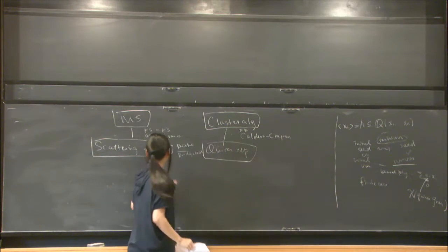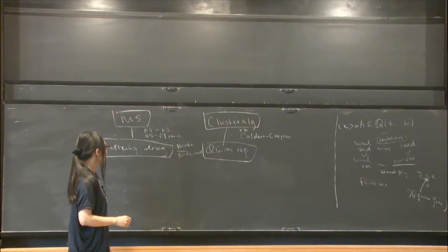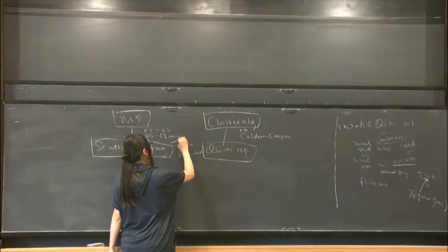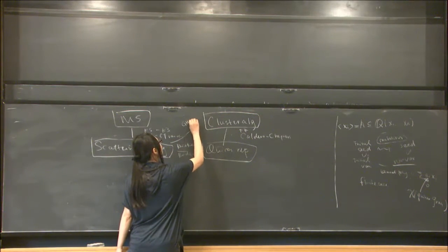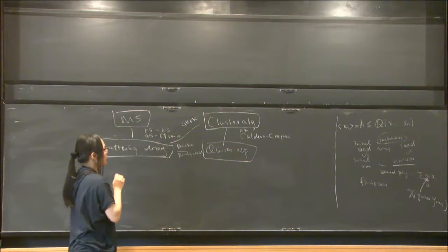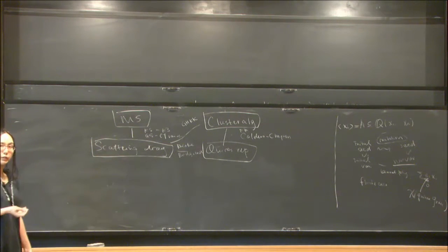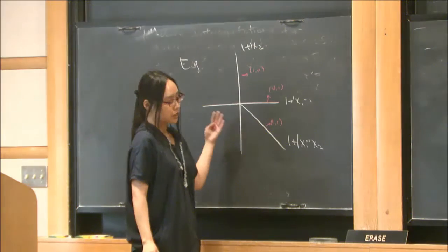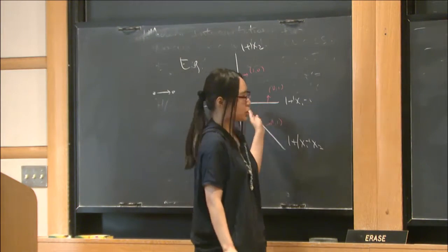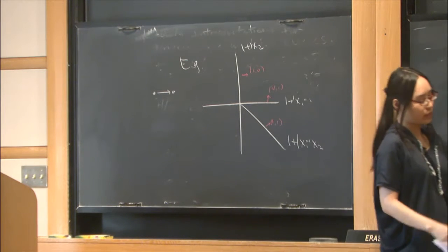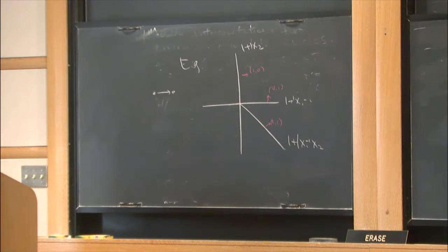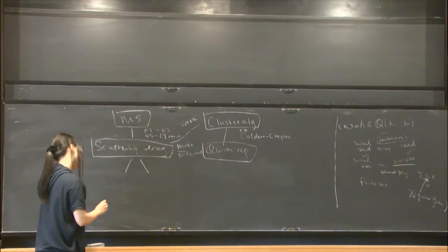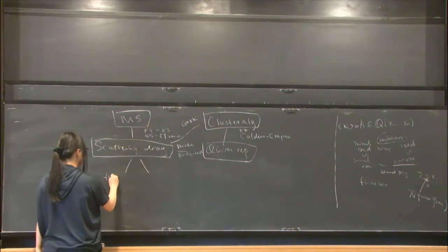And last year, two years ago, there is a paper by Gross-Hacking-Keel-Kontsevich, which they associate a scattering diagram with a cluster algebra. Roughly speaking is this: you can see here, I have different chambers. They just associate, they simply associate a chamber with a seed, and then they make the association. But what they did more, which is in the scattering diagram context, there are two more things: the theta function and Buchennei.